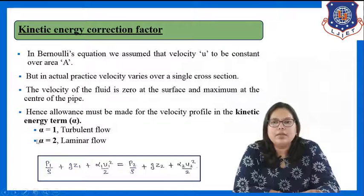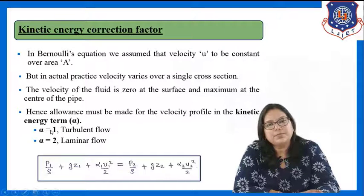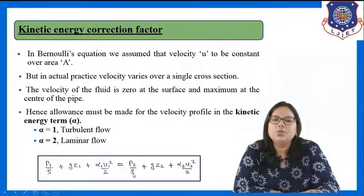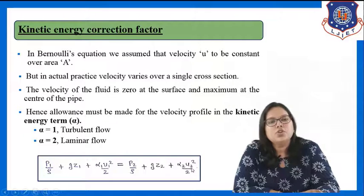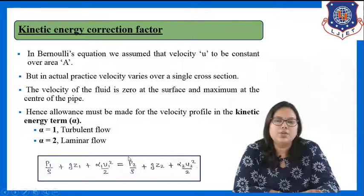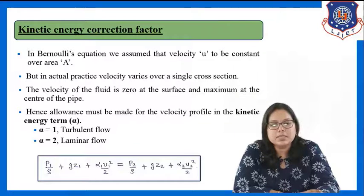We introduce the alpha term into the main equation. The corrected form becomes: p1/ρ + gz1 + α1·u1²/2 = p2/ρ + gz2 + α2·u2²/2. We have simply introduced the term alpha into the kinetic energy term u²/2. This is the form of the equation when applying the kinetic energy correction factor.